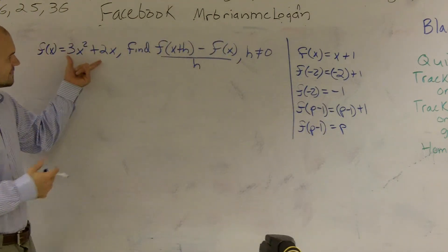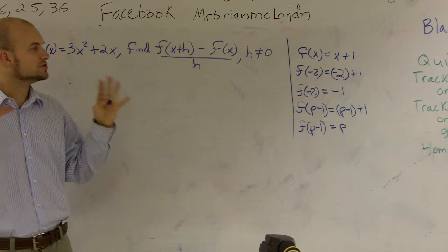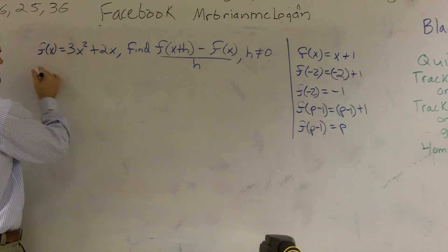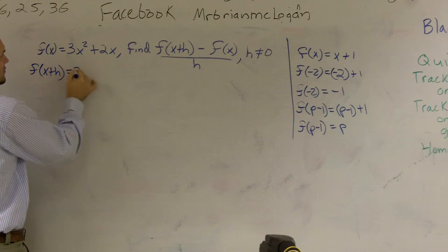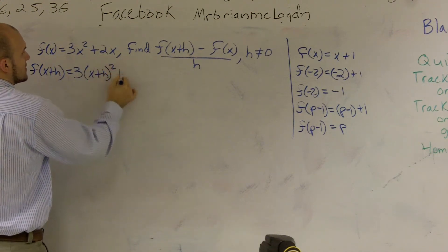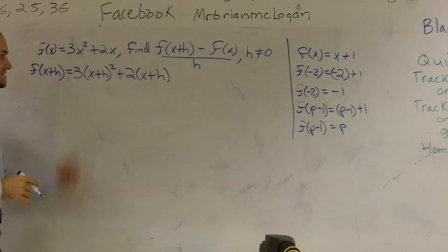So what we have is we have our function, and they want us to find $f(x + h)$. So I'm going to break this up into two different problems. I'm going to find out what $f(x + h)$ is. So if I know $f(x)$ is this, $f(x + h)$ is going to be $3(x + h)^2 + 2(x + h)$. Kind of makes sense? I just plug this in for my $x$ values.